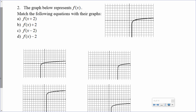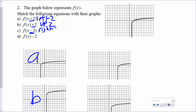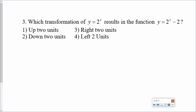The first one: I see plus 2, it's going left 2. Which of these graphs went left 2? This one. The second one: up 2. Which graph went up 2? That one. The third: I'm subtracting 2 from the x, so it's going right 2. Which one's going right 2? This one. And the last one: I'm subtracting 2 from the f(x), so that's going down 2.